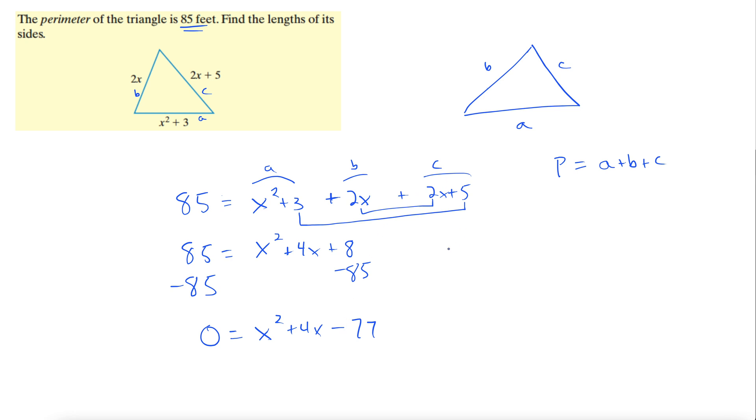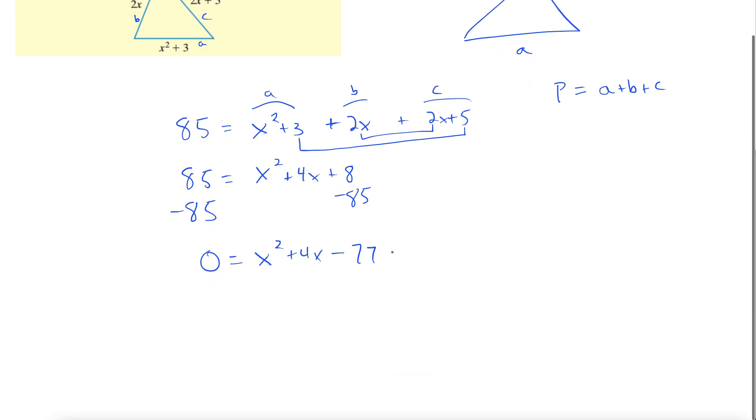So we want to factor that. We have negative 77 and 4. We want factors of negative 77 that add to 4. I'm looking right in the middle here because this is a small number, so we'll look kind of in the middle. Look, 77 is 11 times 7, not accounting for the negatives. And 11 minus 7 is 4, so we're in good shape here.